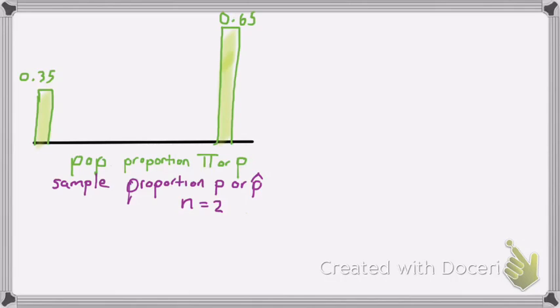In this case, on the right-hand side, I have 65% of the time that's a success based on what was given in the problem, and on the left-hand side, I have the 35% of the time that's a failure.